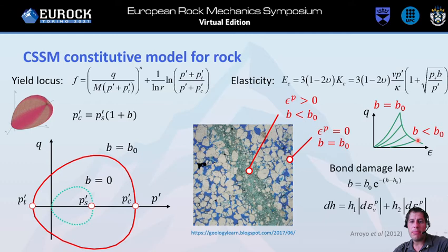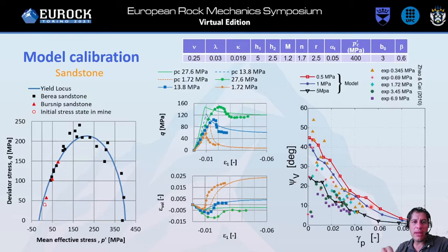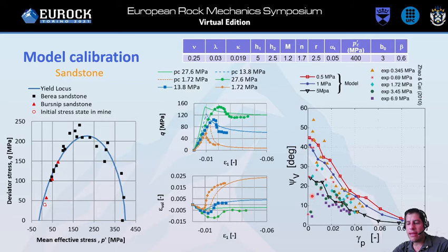How does bonding decrease? With plasticity — specifically, the bond damage law will govern how the bonding variable decreases through deviatoric and volumetric plastic strains. The model can be calibrated on a sandstone. We can fit the yield surface with experimental data from the literature, the post-peak behavior, and the plastic potential thanks to the dilatancy. We see the model captures quite well typical rock behavior.